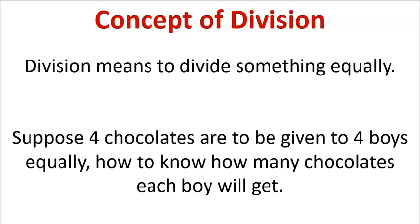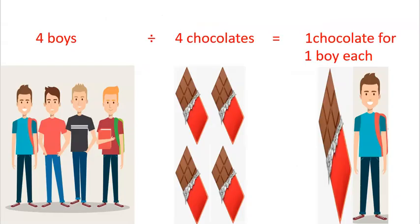Suppose four chocolates are to be given to four boys equally, how to know how many chocolates each boy will get? Here in the picture, four boys divided by four chocolates is equal to one chocolate for one boy each.